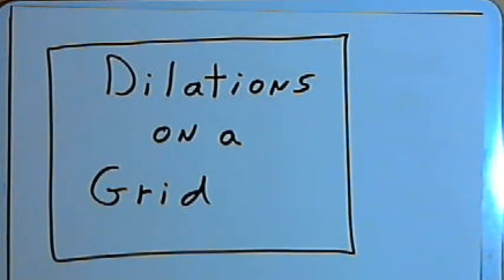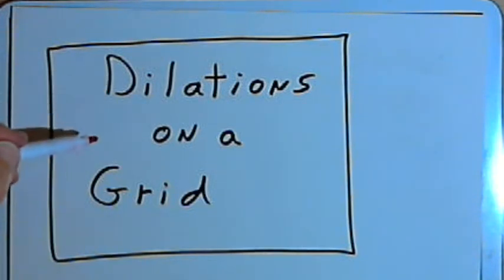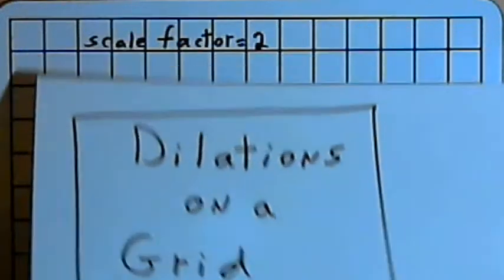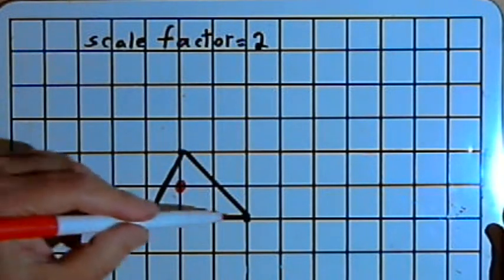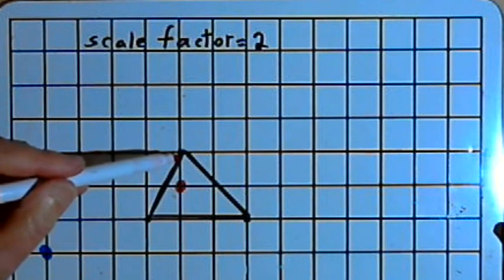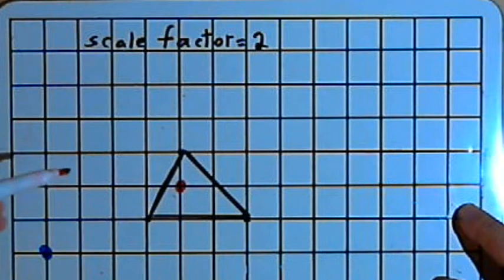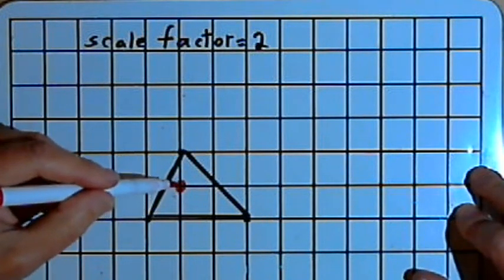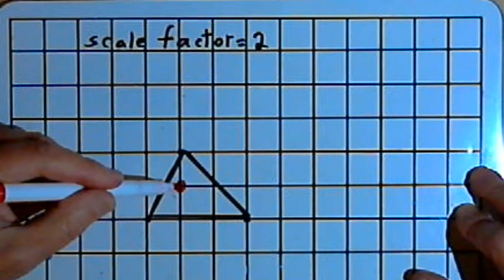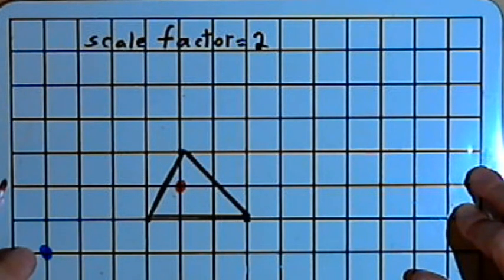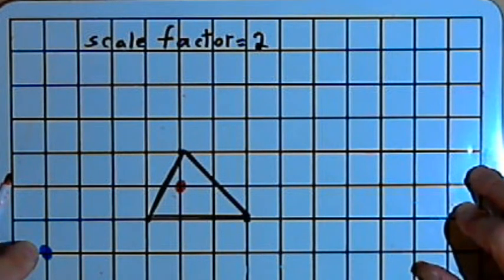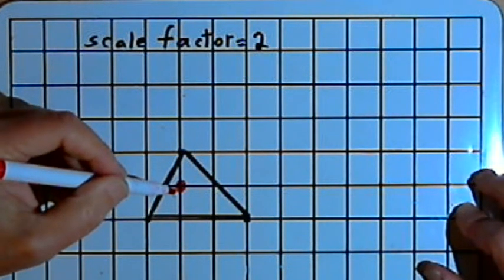This video is provided as supplementary material for courses taught at Howard Community College. In this video I'm going to show how to do the dilation of an image on a grid. I'm going to use this triangle as the image that will be dilated, using a scale factor of 2, and I'm going to do two dilations — one with this red dot as the center of dilation, a dot inside the triangle, and another one using this blue dot as the center of dilation outside of the triangle. Let's start with the red dot as the center of dilation.